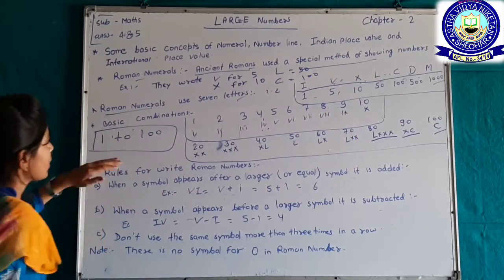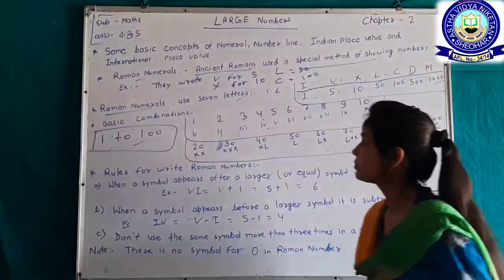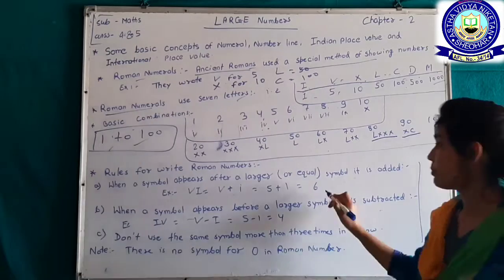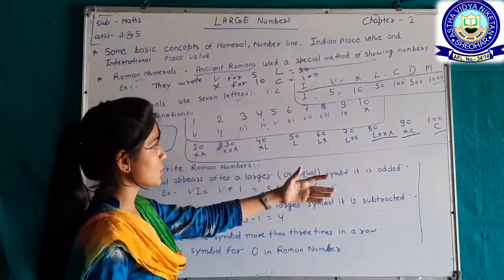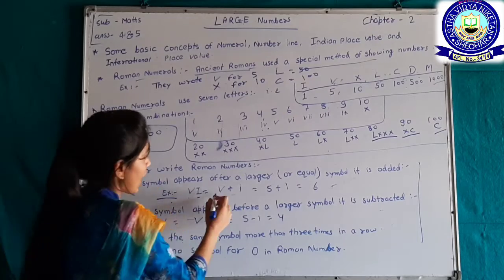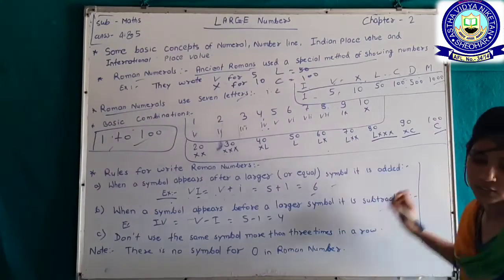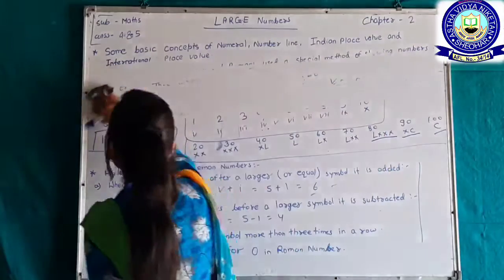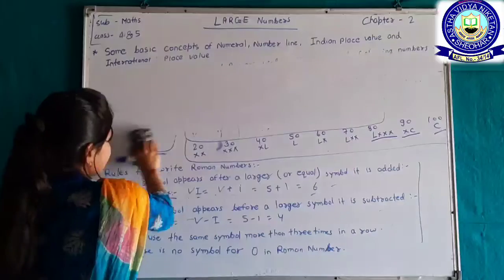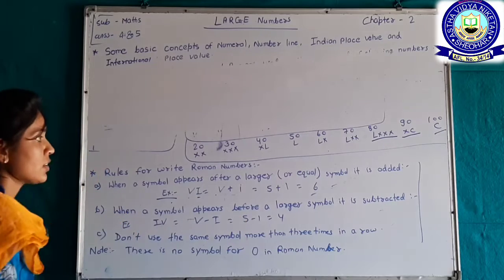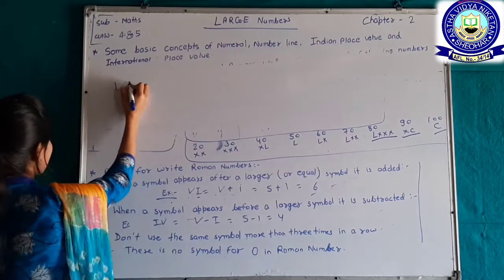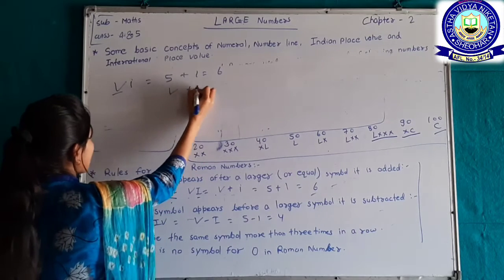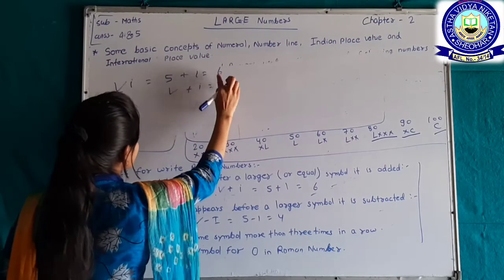You have to write the counting in Roman numerals from 1 to 100 — that is your work. Now let's read some rules for writing Roman numerals. Rule one: when a symbol appears after a larger symbol, it is added. For example, VI means V (5) plus I (1) equals 6.